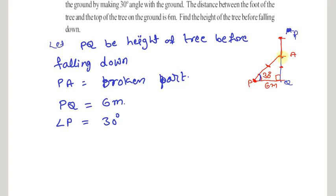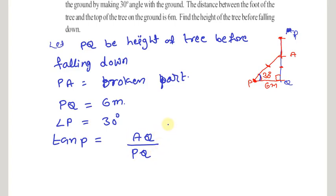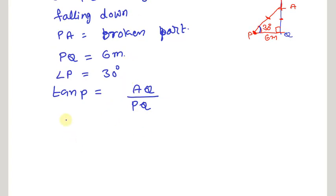Let us first find the opposite side. The opposite side for angle P is AQ. The trigonometric ratio that relates opposite side to adjacent side is tan. So we apply: tan P = AQ / PQ. We know angle P and PQ, so we can find AQ. Writing tan 30 = AQ / 6.